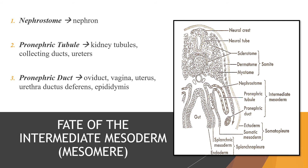The fate of the intermediate mesoderm or mesomere includes the nephrostome, which will eventually become the nephron. The pronephric tubule will give rise to kidneys, kidney tubules, collecting ducts, and ureters. The pronephric duct will give rise to the oviduct, vagina, uterus, urethra, ductus deferens, and epididymis — these are the derivatives of the intermediate mesoderm.